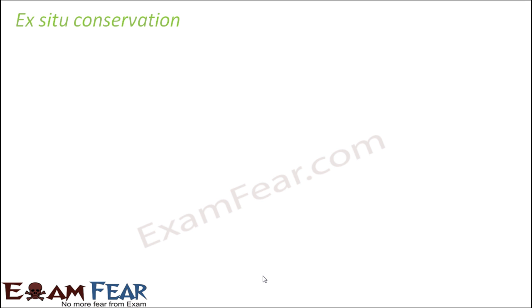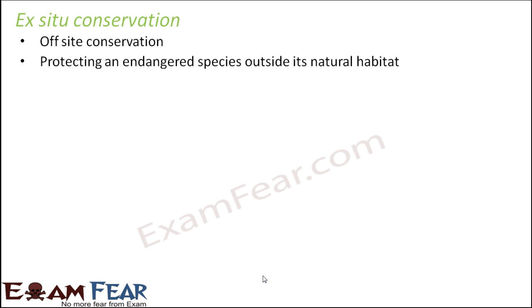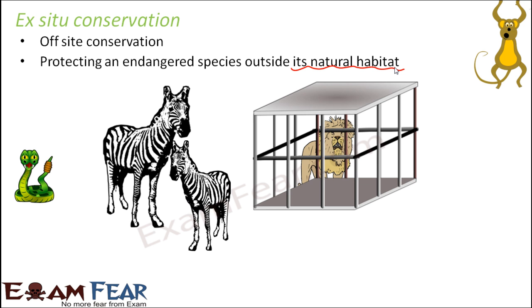The second approach is ex situ conservation, which is off-site conservation. Here, the animals or organisms are not conserved in their natural habitat. Instead, an artificial environment is created where the organism can survive — it is like protecting an endangered species outside its natural habitat. We basically relocate the animal to a particular area where all provisions needed for its survival are given. The best example is the zoo.